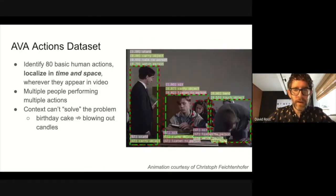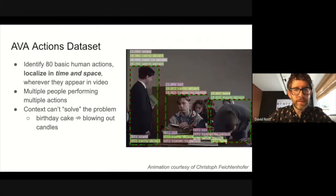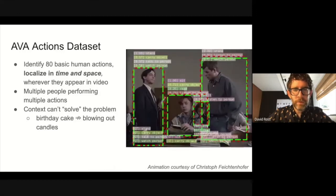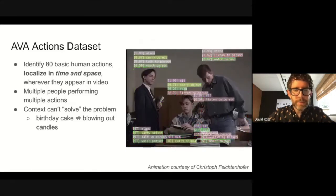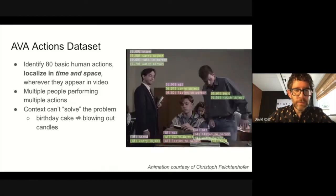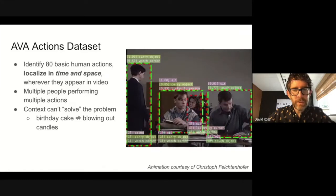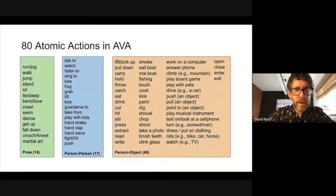The task AVA Actions is trying to solve is to identify 80 basic human actions and to localize them in space and time wherever they appear in the video. An important characteristic of AVA is that at each frame, we annotate multiple people performing multiple actions. This means that contextual cues can't be used as a simple trick to solve the action recognition task. For example, the presence of a birthday cake in the video doesn't imply that the action for everyone in the scene must be blowing out the candles. The AVA Action vocabulary consists of 80 actions, which can be grouped into individual pose actions, person-person interactions, and person-object actions. Only 60 of the most common actions are used in the challenge.